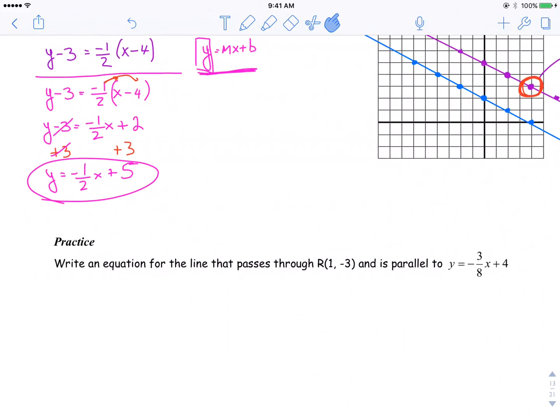Now, practice. It says write an equation for a line that passes through (1, -3) and it's parallel to -3/8x plus 4. I'm going to leave you to do that. When I come up with the next video, I'll quickly run through that example, and then move on to example number 2.